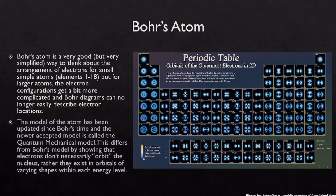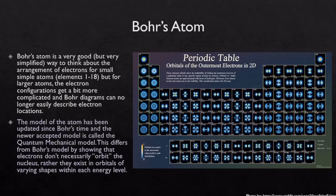This differs from Bohr's model by showing that electrons don't necessarily orbit the nucleus — rather they exist in orbitals of varying shapes within each energy level around an atom. If you take a look at this really pretty picture over here, it shows all of the different locations where electrons can exist around the nucleus of an atom in different energy levels. This one is not drawn to scale. I have another poster by the same artist on another slide later on that shows these orbitals to scale and shows how they can layer on top of each other in different energy levels.